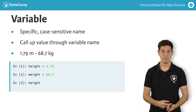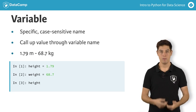If you now type the name of the variable height, Python looks for this name, retrieves its value and prints it out.